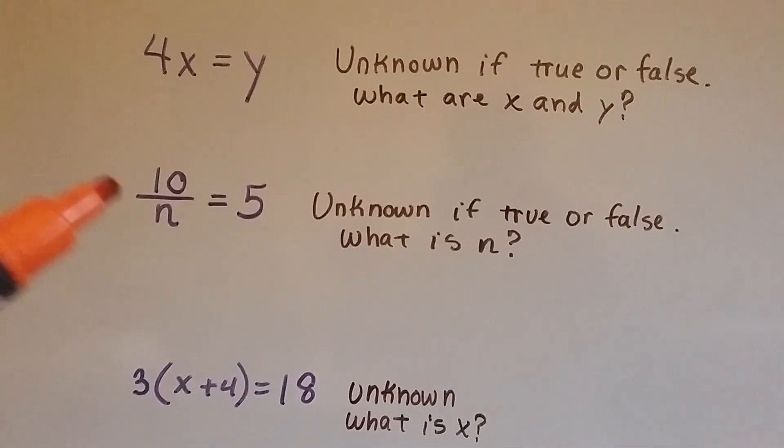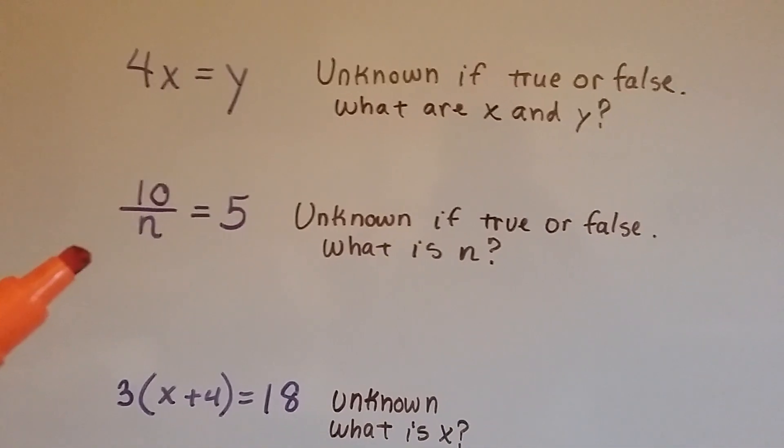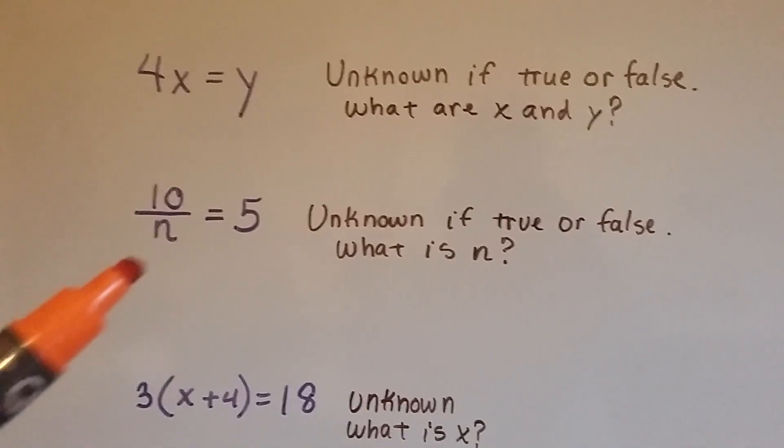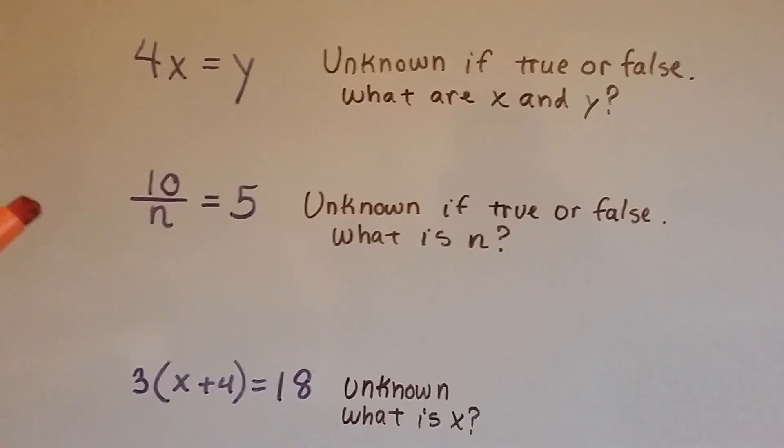How about 10 over n, 10 divided by n equals 5? That's unknown. We don't know if it's true or false because we don't know what n is. If it's 2, it's true, but we don't know if it's 2.